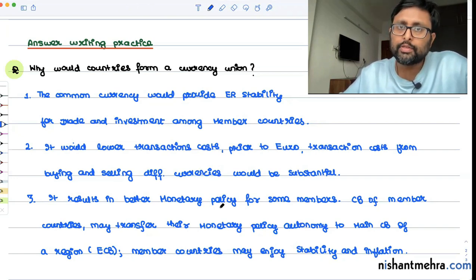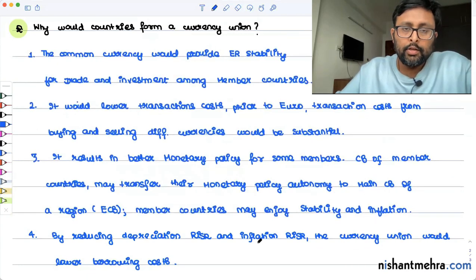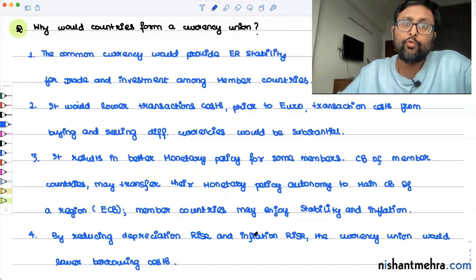But since it reduces the depreciation risk and the inflation risk to a certain extent, it is going to reduce the borrowing costs, which is going to increase the investment and has the growth in the country. So these are a few points which you can probably write in the answer that why would countries form a currency union, right? Thank you.